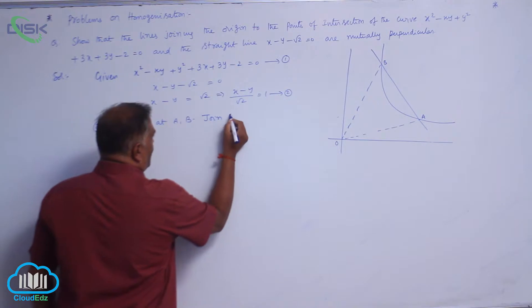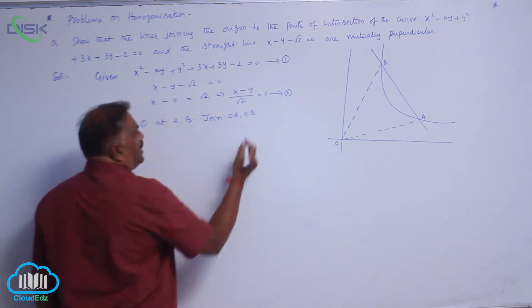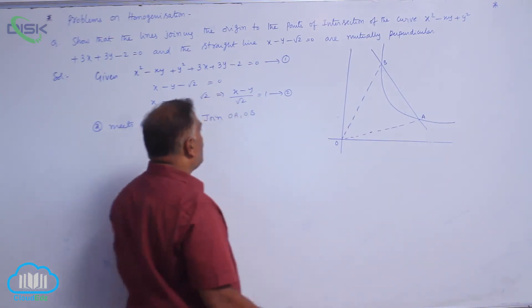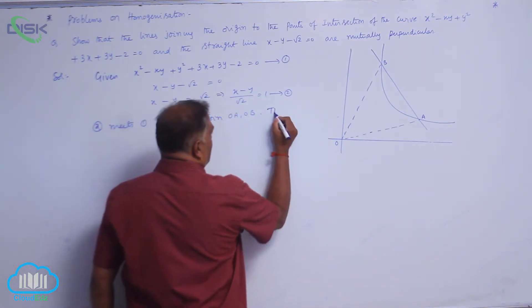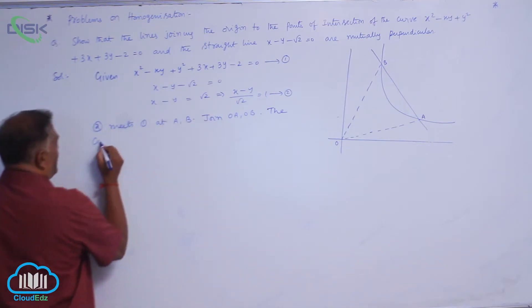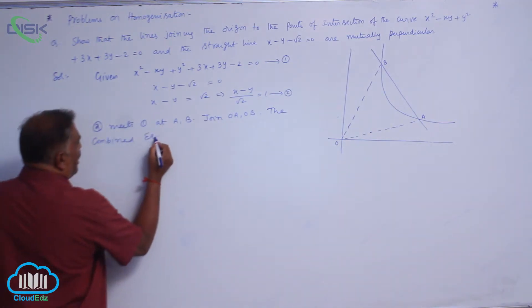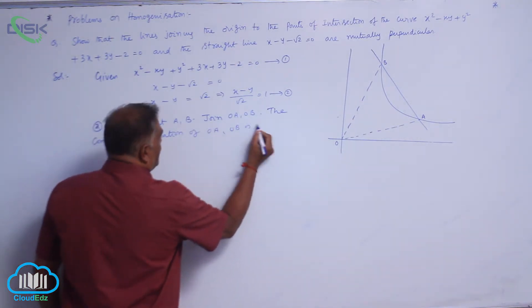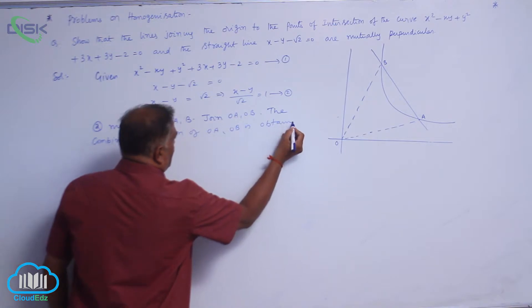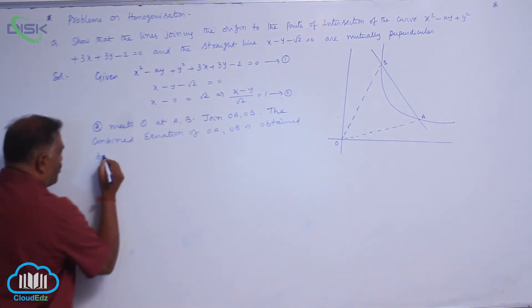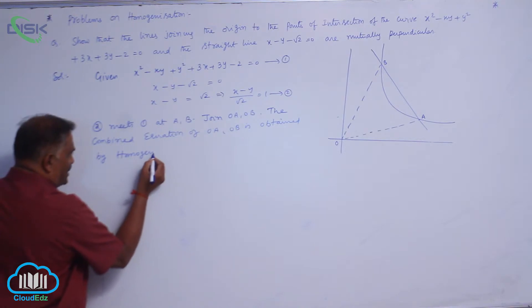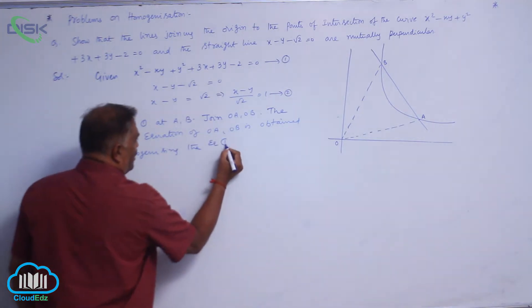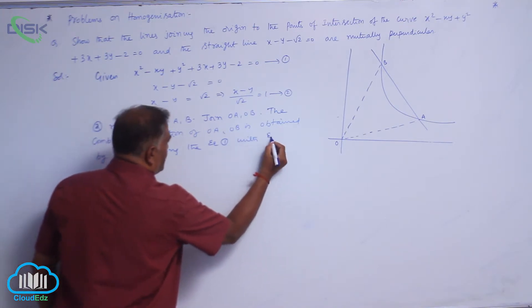Join OA, OB. OA and OB are pair of straight lines passing through the origin. So, we require its combined equation. The combined equation of OA, OB is obtained by homogenizing the equation 1 with equation 2.